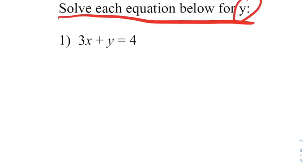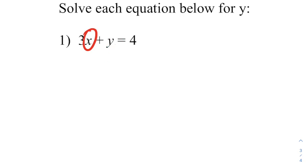Okay, it says solve each equation below for y. So we see two variables, just like the previous problems, and we see that we're supposed to get one of them alone. We're supposed to get y alone. What I'm going to do here is I'm going to say, what is keeping y from being alone? Well, it's this 3x and they're connected with addition. So how do I get rid of that? I subtract 3x.